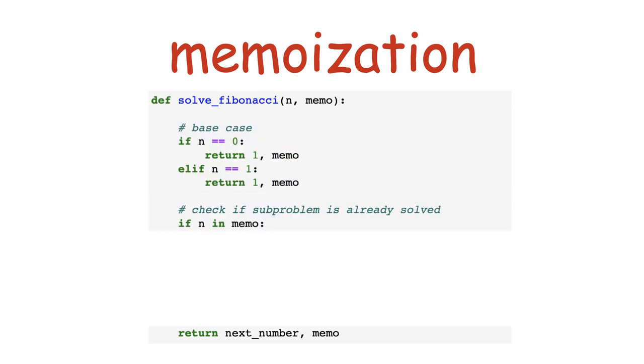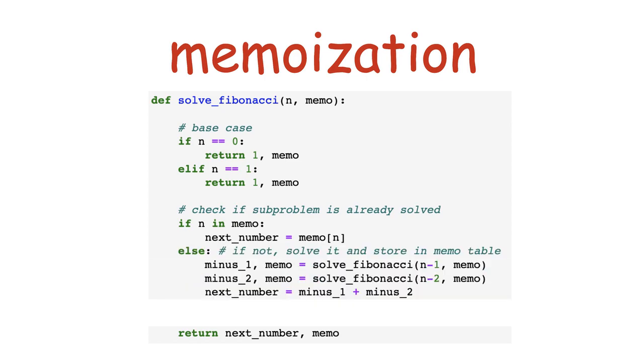Now, we need to check if the subproblem we are trying to solve is in the memo dictionary. If it is, we just extract the answer, but if it isn't, we need to actually solve the subproblem, and store the result in the memo table, or in this case dictionary, for future use. This is all for memoization.